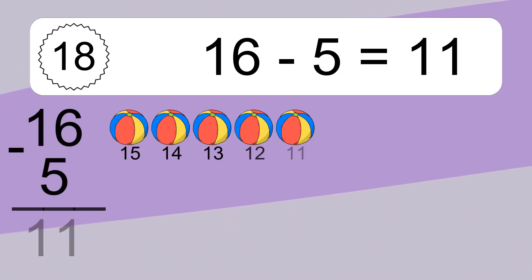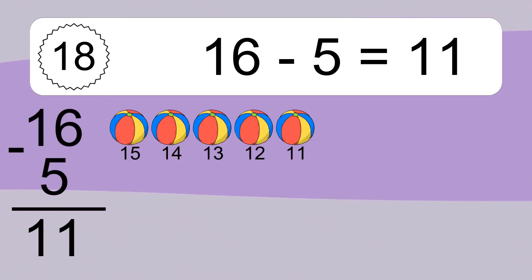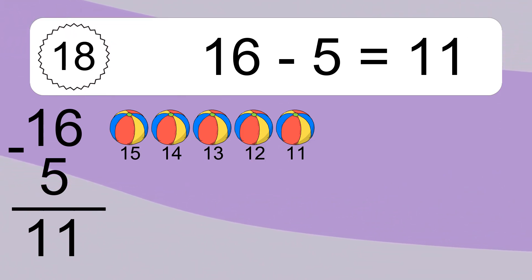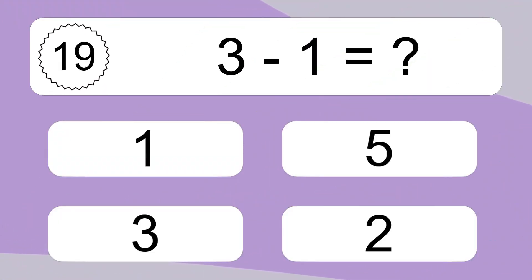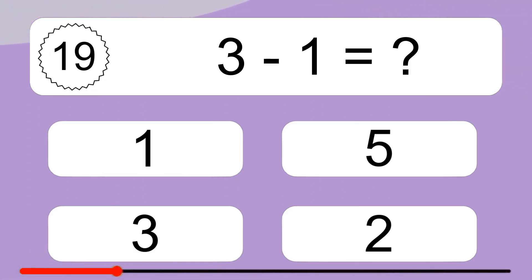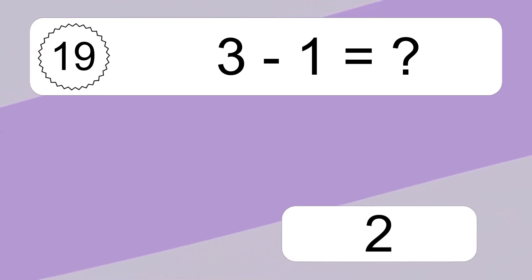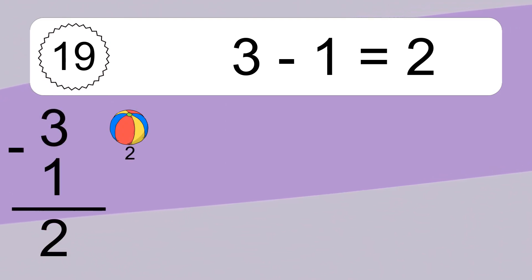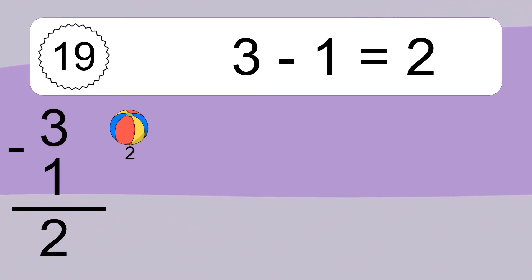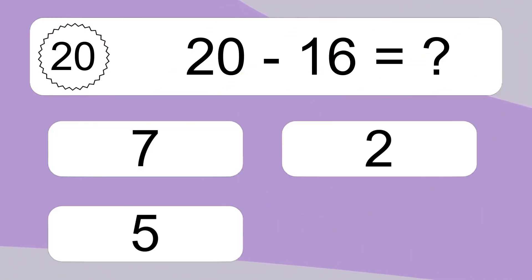16 minus 5 equals 11. Let's count it: 15, 14, 13, 12, 11. 3 minus 1 equals what? 3 minus 1 equals 2. Let's count it: 2. 20 minus 16 equals what?